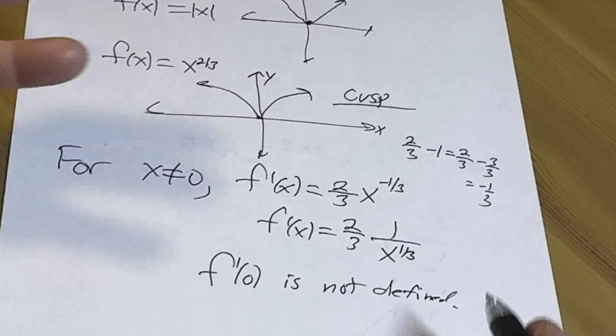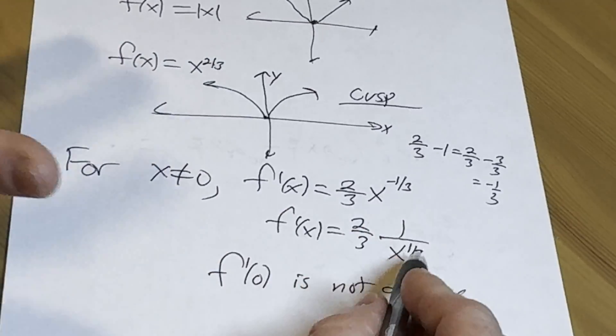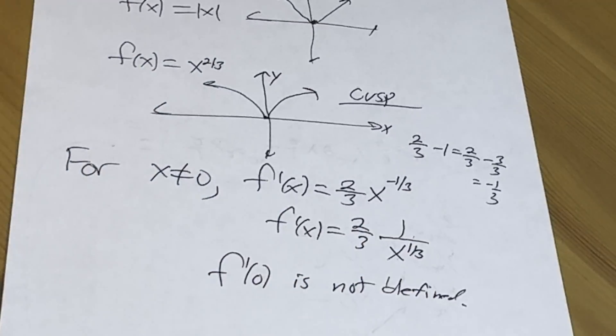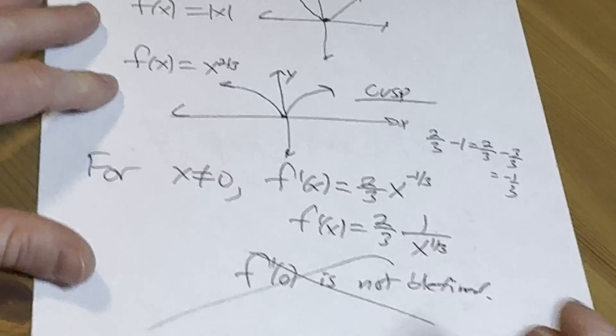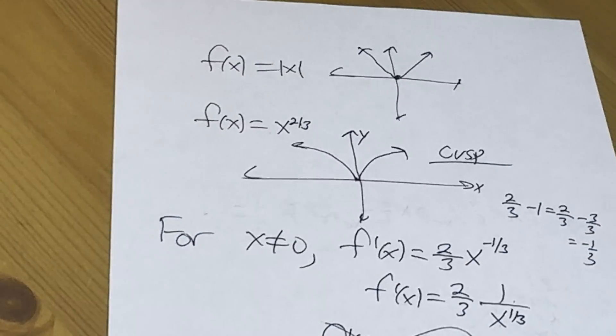So it doesn't exist. So the derivative does not exist at zero because one over zero does not exist. So this is no good. So that's another example of something kind of cool like that.